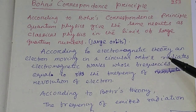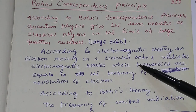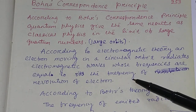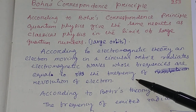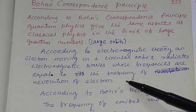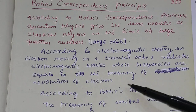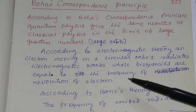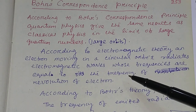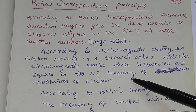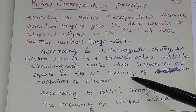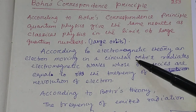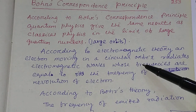According to Electromagnetic Theory, an electron moving in a circular orbit radiates electromagnetic waves whose frequencies are equal to the frequency of revolution of the electron. This frequency of revolution of the electron is from classical theory.